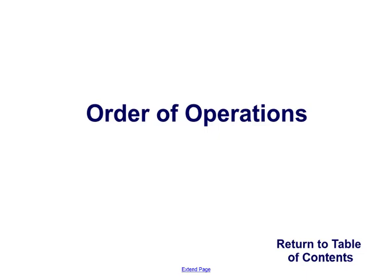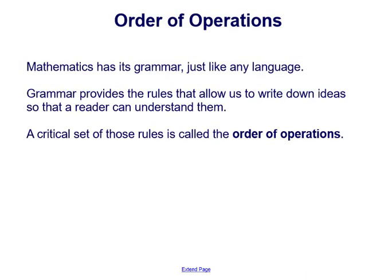Order of operations. Mathematics has its grammar just like any language. Grammar provides the rules that allow us to write down ideas so that a reader can understand them. A critical set of those rules in mathematics is called the order of operations.